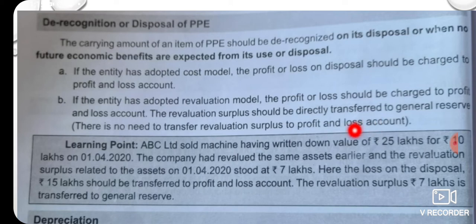Under the Revaluation Model, we follow the Profit or Loss Account for the gain or loss on disposal. The other component is the General Reserve, to which the Revaluation Surplus is transferred.